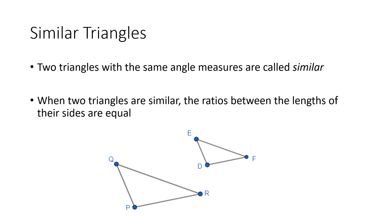One of the fundamental things that makes trigonometry of right triangles work is properties of similar triangles. When we have two triangles that have the same angle measures, we call those triangles similar. So in these two triangles, the angle at P would be the same measure as the angle at D, the angle at Q would be the same measure as the angle at E, and the angle at R would be the same measure as the angle at F. And when that happens, it turns out that the ratios between the lengths of the sides of these triangles are equal.